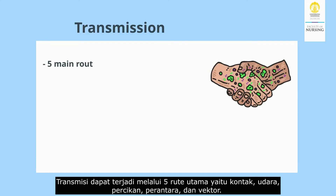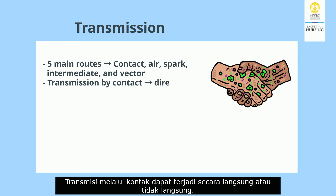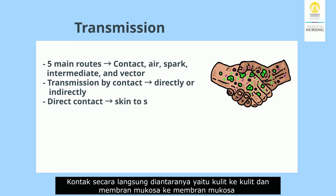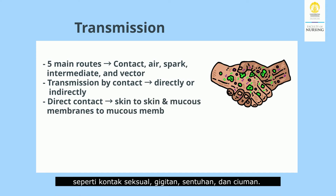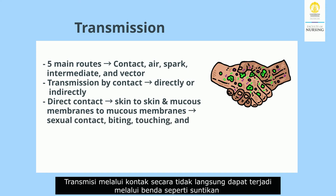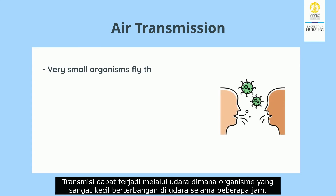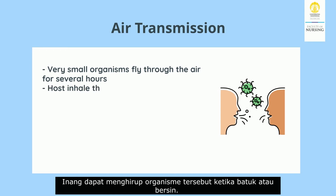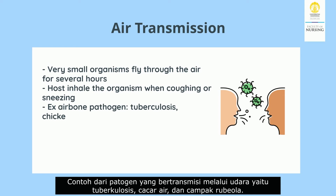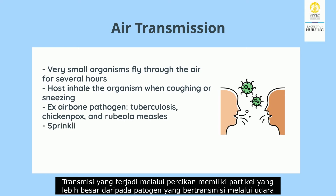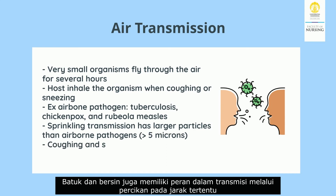Transmission can occur through five main routes: contact, air, droplet, intermediate, and vector transmission. Contact transmission can occur directly or indirectly. Direct contact includes skin-to-skin and mucous membrane contact such as sexual contact, biting, touching, and kissing. Indirect contact can occur through objects such as injections and ingestion of food contaminated with feces. Airborne transmission involves very small organisms that fly through the air for several hours, including tuberculosis, chicken pox, and rubella. Droplet transmission involves larger particles from coughing and sneezing.